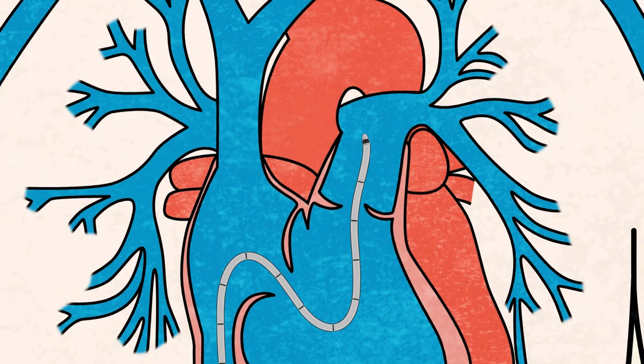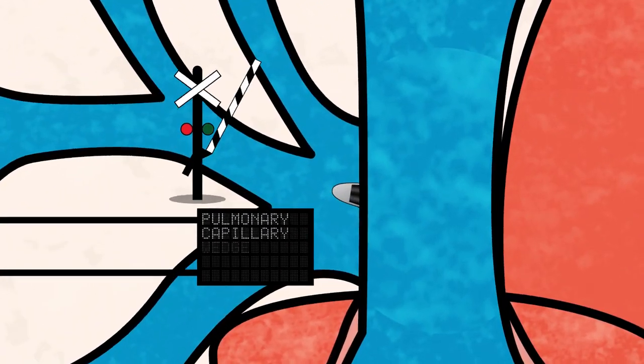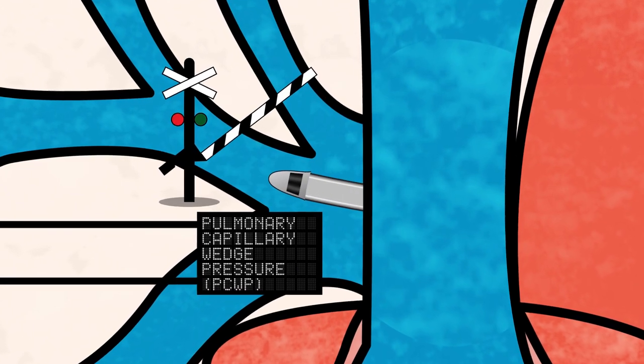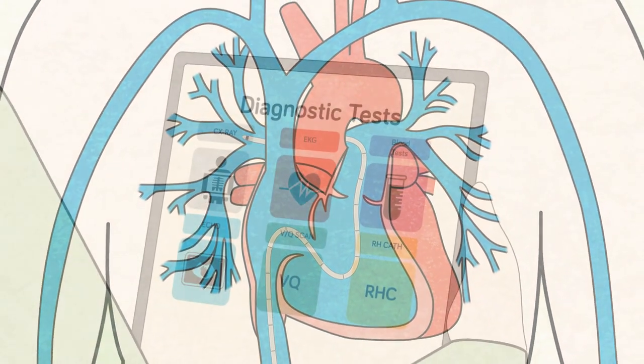After advancing farther into the pulmonary artery, the lead car will read the pulmonary capillary wedge pressure, which is the final pressure needed to complete the right heart catheterization.